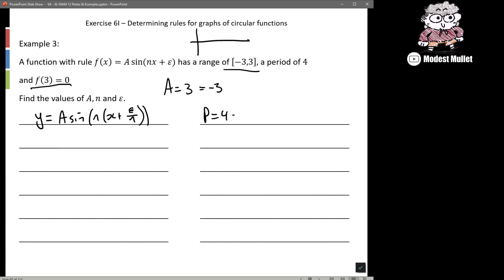Okay, period of 4. So period = 4 = 2π/n, so we get 4n = 2π. We're going to get n = 2π/4, so that's equal to π/2. So there we go, we get our n value.